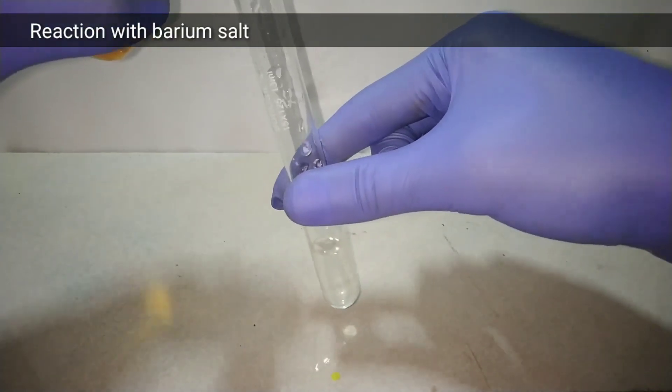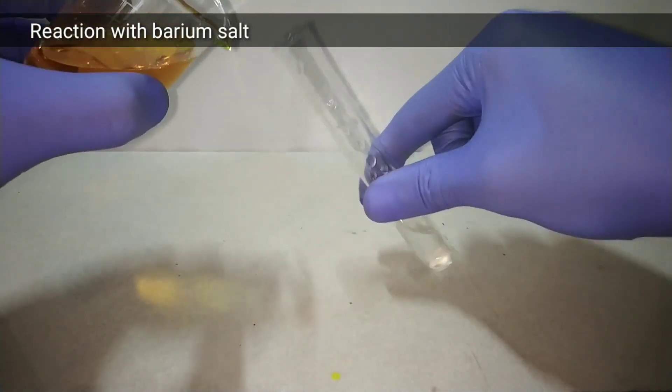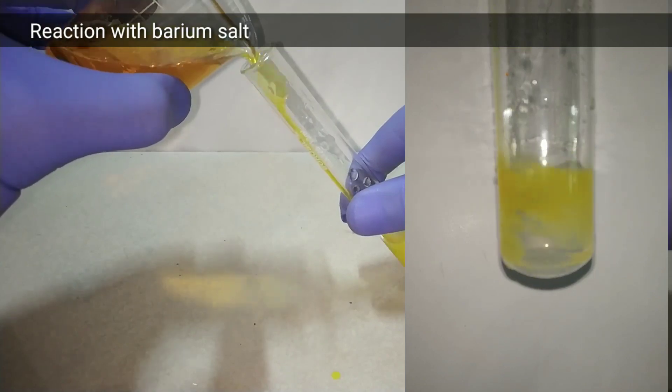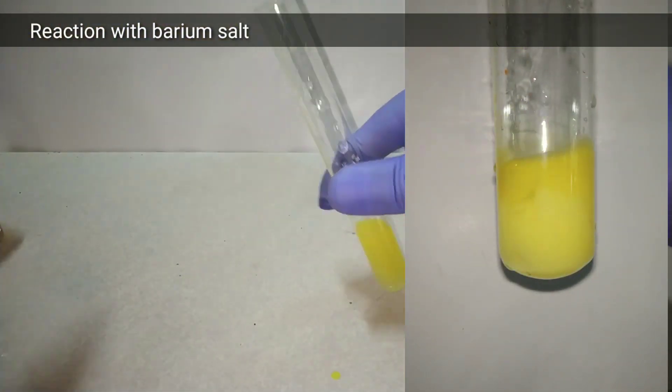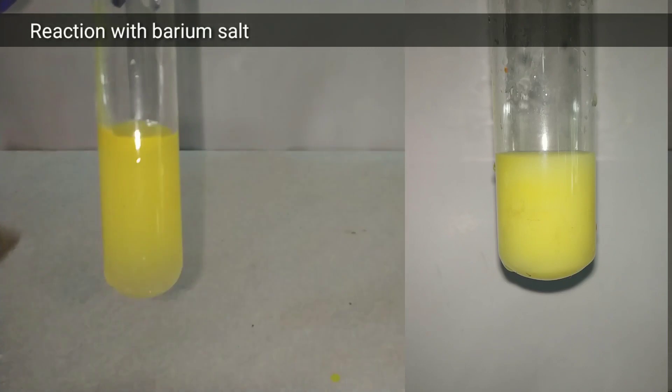A similar reaction occurs when we add ammonium dichromate into a barium salt. On adding the ammonium dichromate you can see a pale yellow colored precipitate of barium chromate is formed.